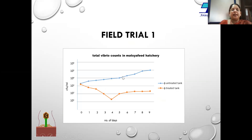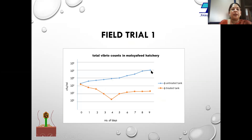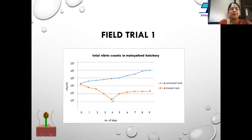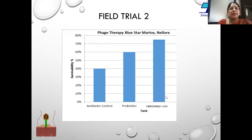This graph depicts the reduction in vibrio count in the hatchery tank. The blue line indicates the tank in which probiotics were used, where the CFU per mL was 10^5 after nine days, whereas in the tank where vibriophages were used, the count was three logs lower than the probiotic control.